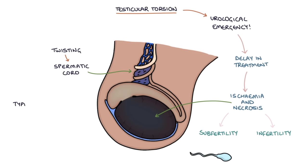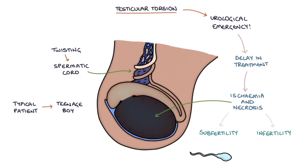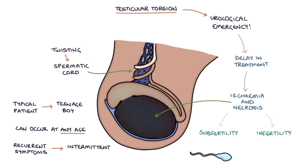The typical patient is a teenage boy, but testicular torsion can occur at any age. There may be a history of recurrent symptoms in patients where there is intermittent testicular torsion, where the testicle twists and untwists intermittently.